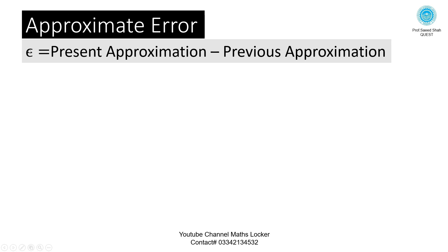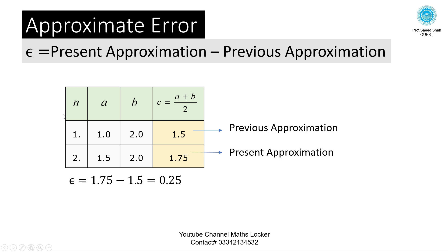Approximate error: notation epsilon = present approximation minus previous approximation. Following the table format: number of iterations n, a value, b value, c = (a + b)/2 — this is the bisection procedure. For n=1: a=1, b=2, c=(1+2)/2=1.5. For n=2: a=1.5, b=2, c=(1.5+2)/2=1.75. This 1.75 is the present approximation; 1.5 is the previous. Using the formula: epsilon = 1.75 − 1.5 = 0.25.